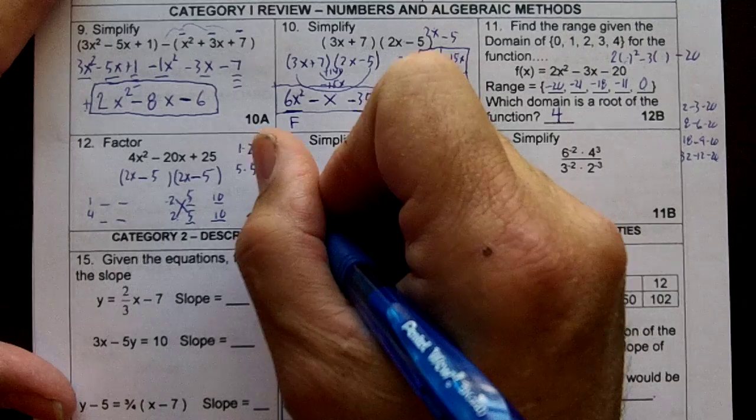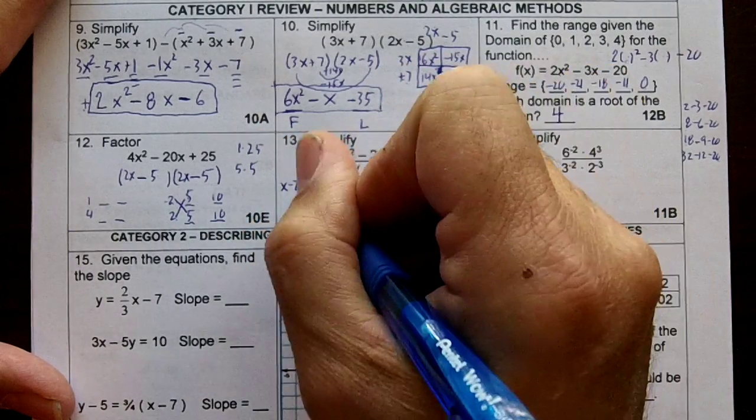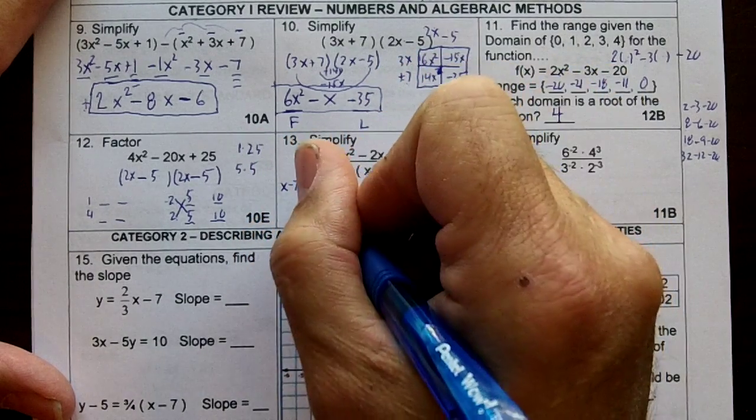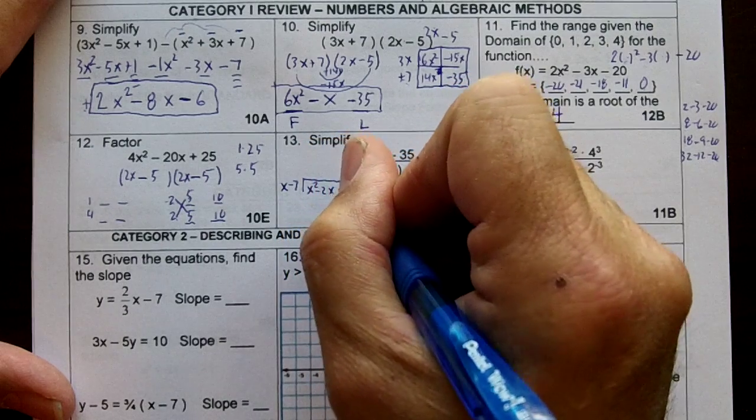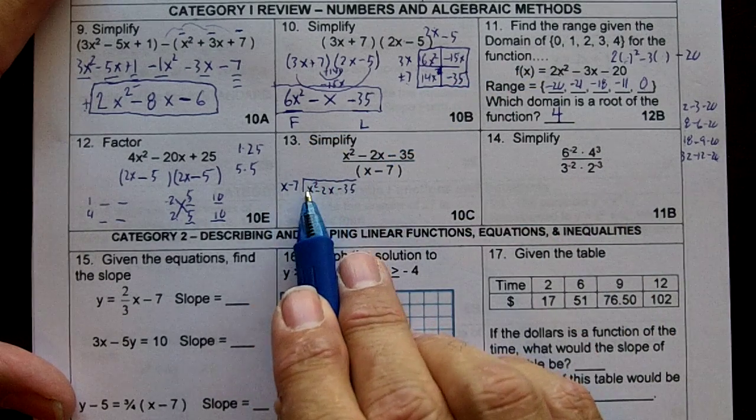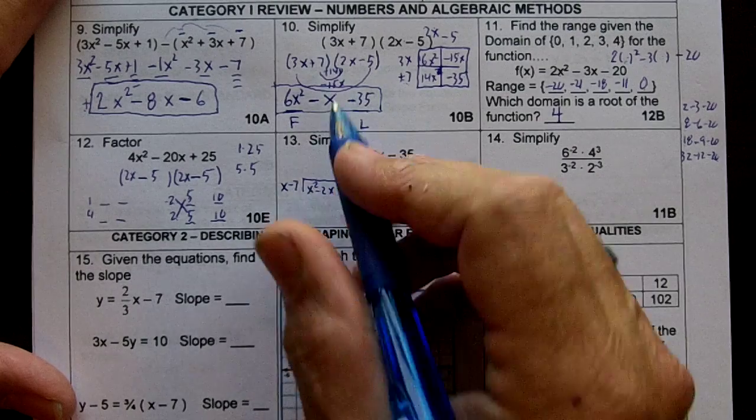I'm going to divide x minus 7 into x squared minus 2x minus 35. What can I multiply x by to get x squared? I can multiply by x.